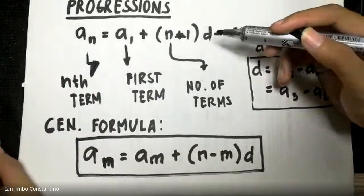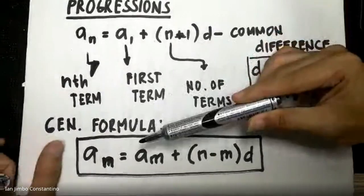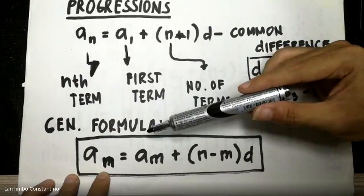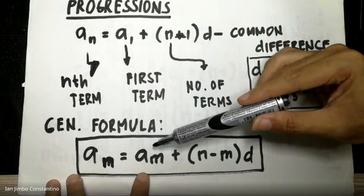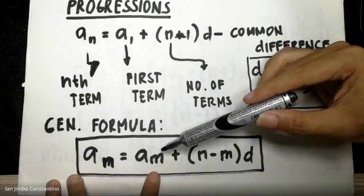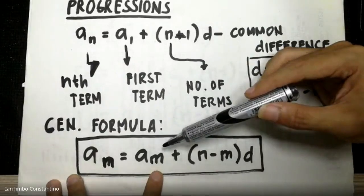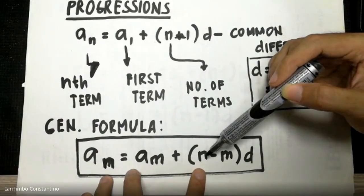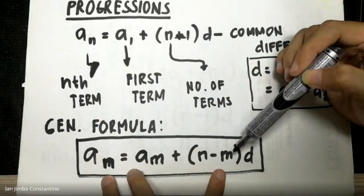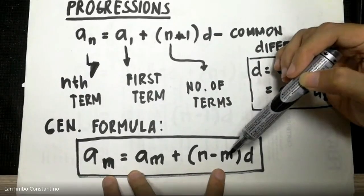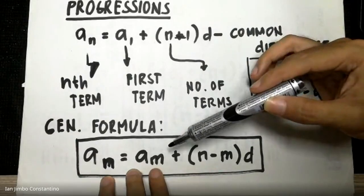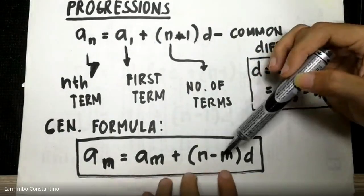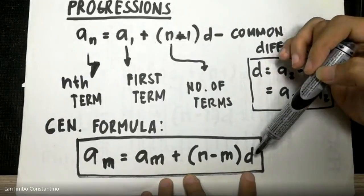For the general formula, the nth term — or any term you are looking for in the progression — is equal to am plus (n minus m) times d, where am is any starting point or starting number in your sequence, and m is the starting term number.